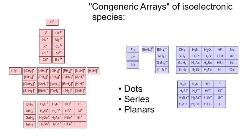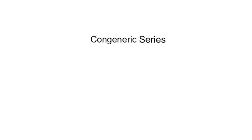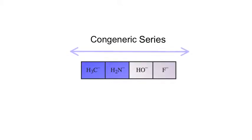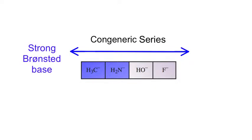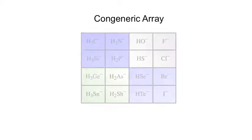Let's look at congeneric series first. One example goes from CH3−, NH2−, OH−, to F−. We find regular chemical properties along this series: the carbanion CH3− is the strongest base, and fluoride ion is the weakest Brønsted base.